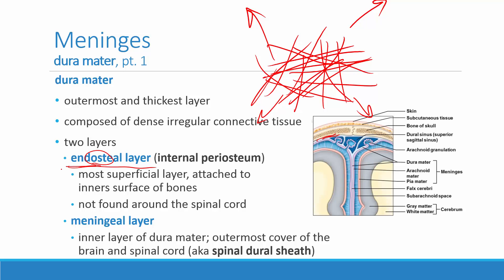We don't see the endosteal layer around the spinal cord. Then there is the meningeal layer — the inner layer — which is the outermost covering of the brain and spinal cord. If you take away the skull you lose the endosteal layer but you're left with the meningeal layer. When we saw the dura mater in lab today it was the meningeal layer of the dura mater, also known around the spinal cord as the spinal dural sheath.